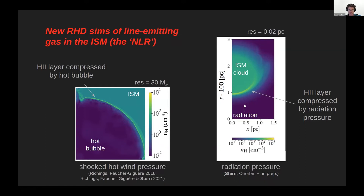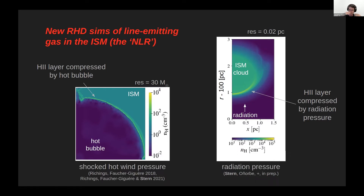On the left are simulations led by Alec regions in Durham, where he simulates a hot bubble expanding into the ISM and driving a wind. On the right are simulations developed by Jose Oñorubel from the University of Sevilla and by me, where we simulate an ISM cloud subject to strong radiation pressure from the quasar. The goal is to resolve the small layer that dominates the emission lines — a subparsec-scale layer in the radiation pressure case — and once we resolve it, make predictions for emission line spectra in each scenario.